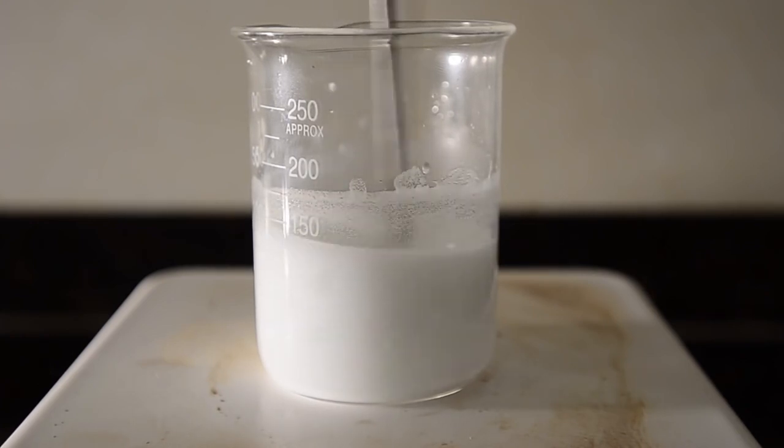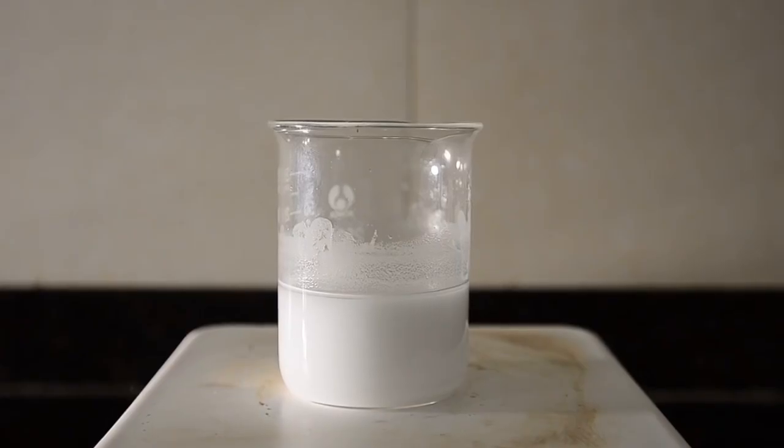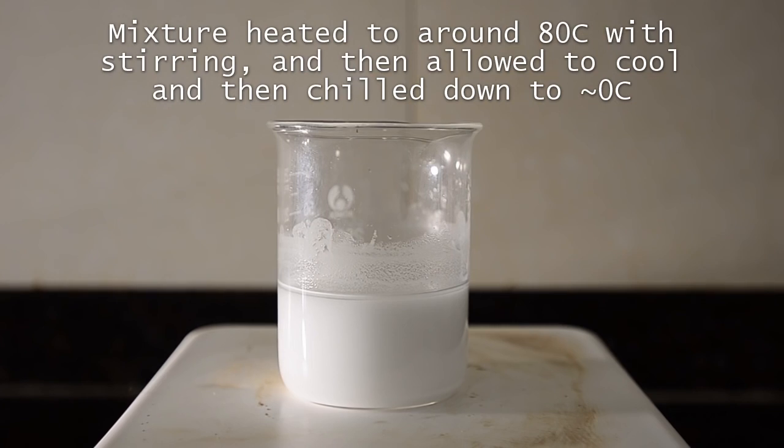You can see that the white crystalline deposit is quite thick and different to the original salt. We stirred the mixture for a few minutes and heated up to around 80 degrees C, then allowed it to cool right down to nearly zero degrees in order to precipitate as much of the sodium chloride salt as possible.